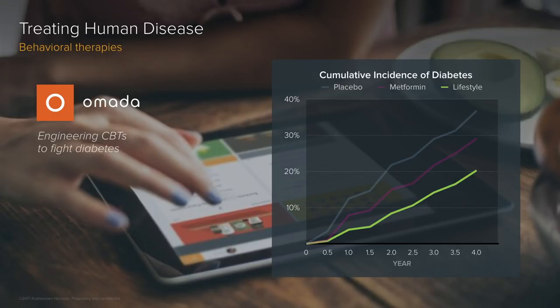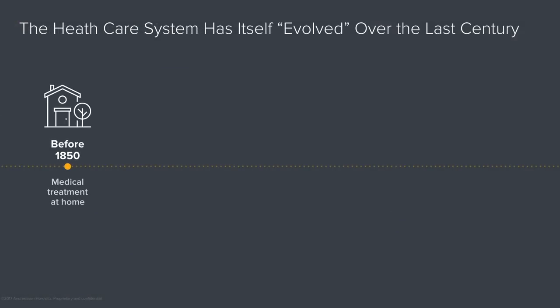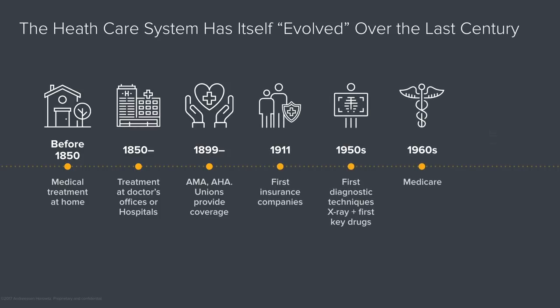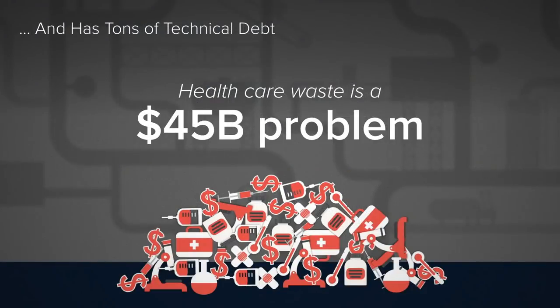Let's step up one more level and talk about the healthcare system. The healthcare system wasn't really designed — it essentially evolved over time, almost like its own biological organism. It started with doctors coming to our houses, then hospitals, then unions and the AMA, then insurance companies, then modern medicine with x-rays, drugs, and therapies, leading to more need to pay for Medicare, and more recently new models like HMOs and capitation. These are features that came along, but not from a clean-slate design — very much with a lot of technical debt. One of the most dramatic consequences is a huge amount of health waste, with nobody effectively quarterbacking healthcare coordination.